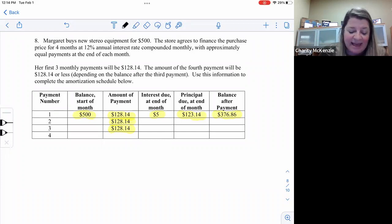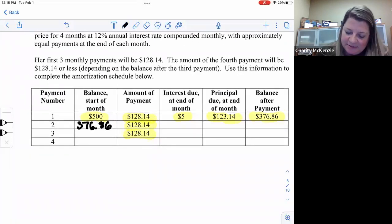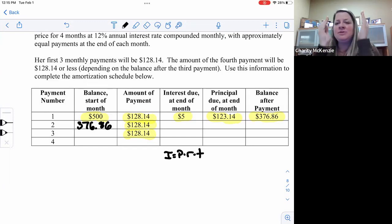Let's figure out what's not filled in. So the next month, if the balance at the end of mine is 376, the balance at the start is 376.86. So if the balance was that, then I'm going to have to have that same balance. Let's just blow it up so I can write a little smaller. And then the interest due, how am I going to find this interest? I'm going to use PERT.